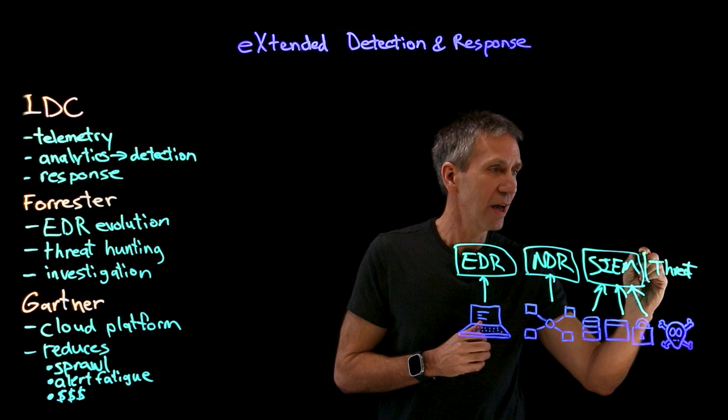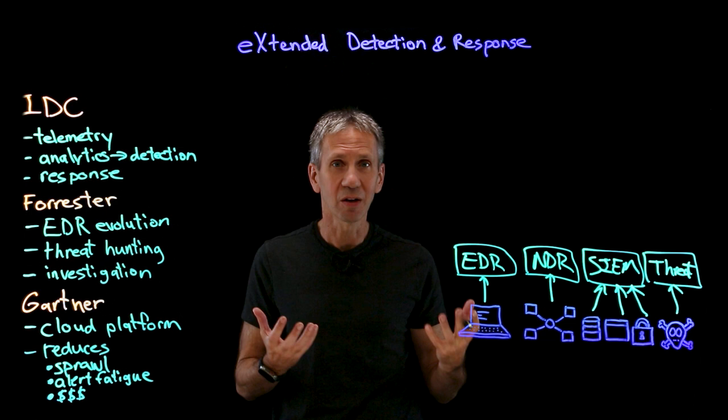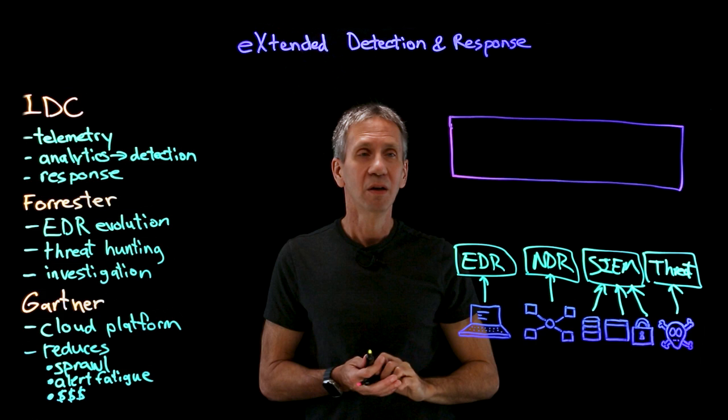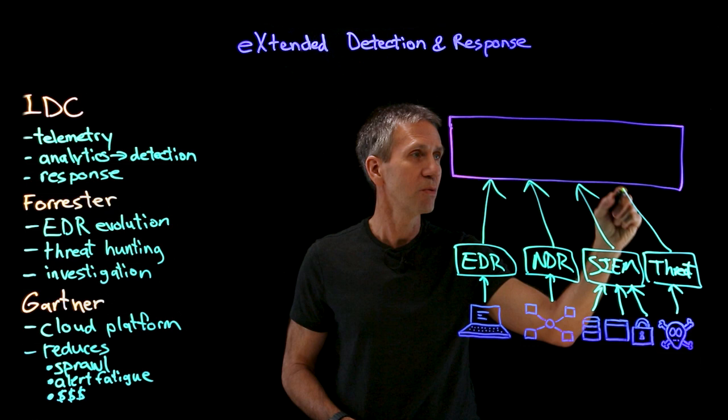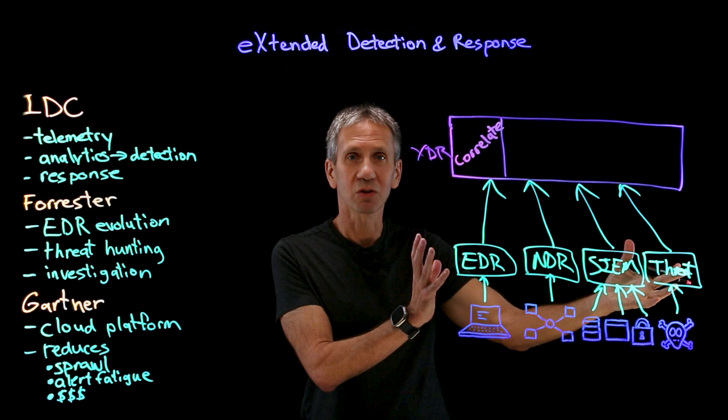We might also take threat-related information — a feed that comes in from a number of different sources, potentially, telling us what's happening in the security world right now: what exploits are being used more actively these days. Then I'd like to take all of that information — from my EDR, from my NDR, from my SIEM, and the threat intelligence feed — and put all of those things up into the XDR, which has a number of different components to it.